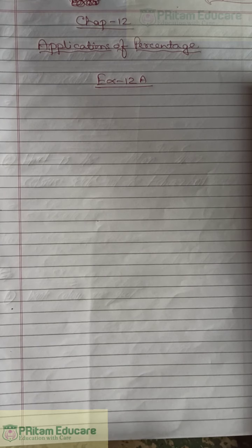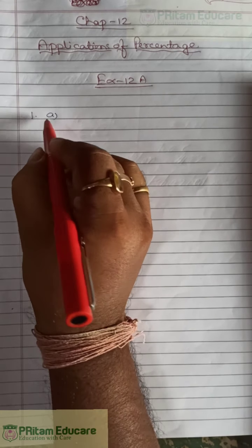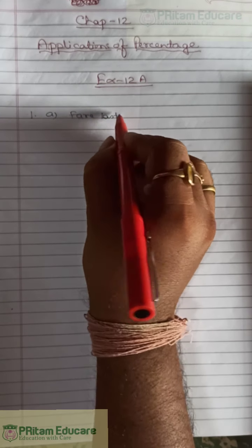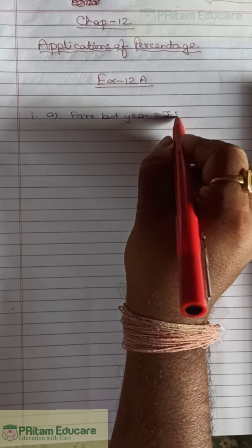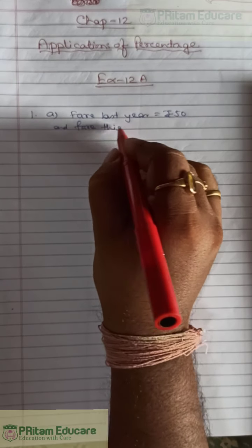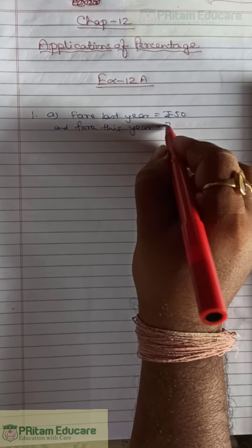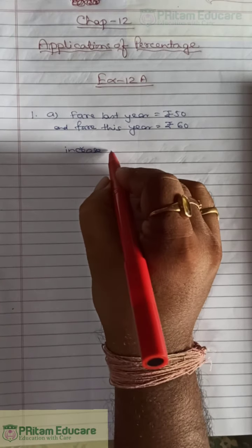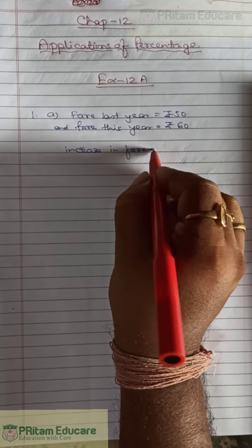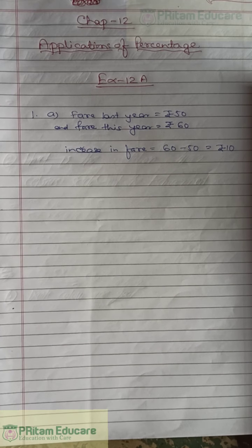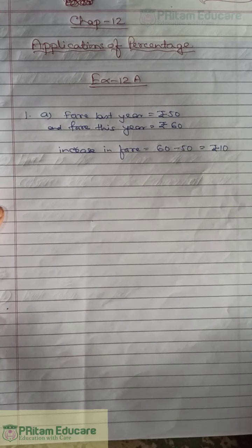Question 1a: Last year the bus fare was rupees 50 and this year it is rupees 60. Naturally it is an increase. Fare last year: rupees 50. Fare this year: rupees 60. Then increase in fare = 60 minus 50 = rupees 10. So rupees 10 is the increase in fare.